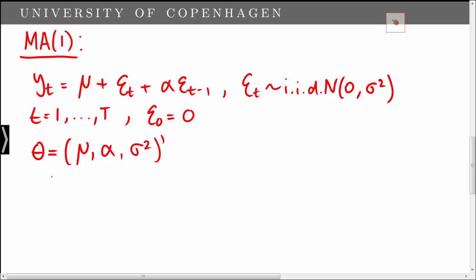Note here that epsilon t minus 1 is an unobserved variable, meaning that we cannot estimate theta by least squares estimation. We will have to rely on maximum likelihood estimation in order to estimate mu, alpha, and sigma squared.